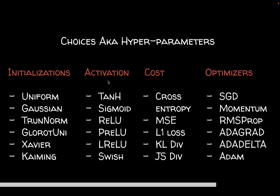Activation functions are a central part of the optimization process and must be differentiable. The gradient of sigmoid is convenient — if sigmoid is σ(x), the gradient is σ(x) · (1 − σ(x)). These days ReLU is widely used because it is piecewise linear and fast to compute. There are also ReLU variants, and the most advanced activation is Swish. The cost function also has to be differentiable, and we'll explore KL divergence and Shannon entropy later in the course.